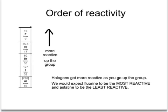From these displacement reactions, we can see that the order of reactivity is that they get more reactive as you go up the group, which is the opposite to group 1. So the most reactive of the halogens is fluorine. Fluorine would therefore be able to displace chlorine, bromine, or iodine — or indeed astatine — from solutions of their ions.